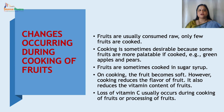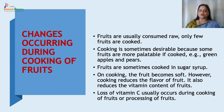Changes occurring during cooking of fruits: Fruits are usually consumed raw; only a few fruits are cooked. Cooking is sometimes desirable because some fruits are more palatable if cooked, for example green apples and pear. Cooking adds variety, and fruit stews are very good for small children. Fruits are sometimes cooked in sugar syrup. On cooking, the fruit becomes soft. However, cooking reduces the flavor of fruit and also reduces the vitamin content. Loss of vitamin C usually occurs during cooking or processing of fruits.